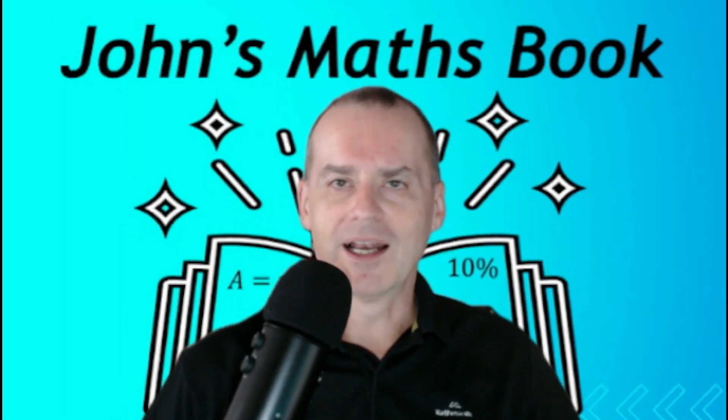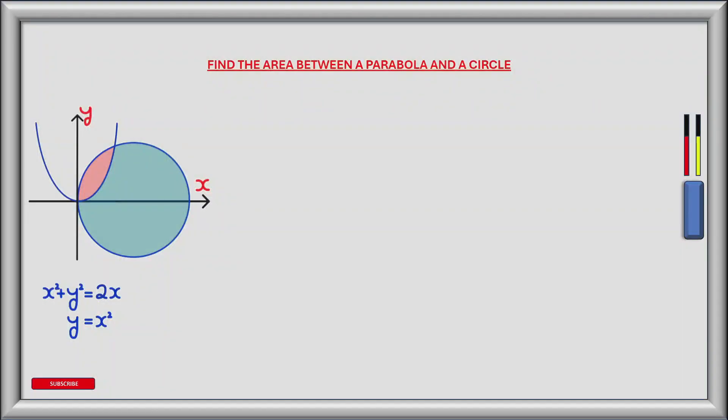Without further ado, let's go over to the whiteboard. In this exercise I'm going to be showing you how to calculate the area between a circle and a parabola using double integration and polar coordinates. I'll demonstrate how to define the region in terms of integrals and if you stick around until the end I'll show you how to evaluate the integrals.